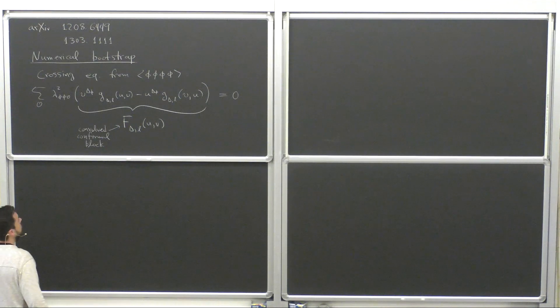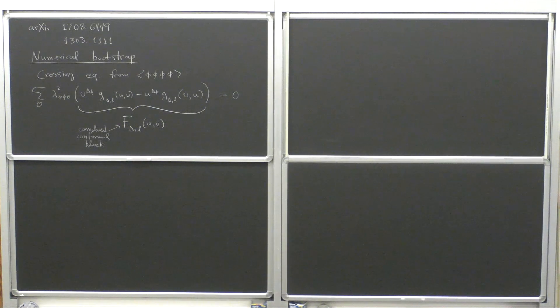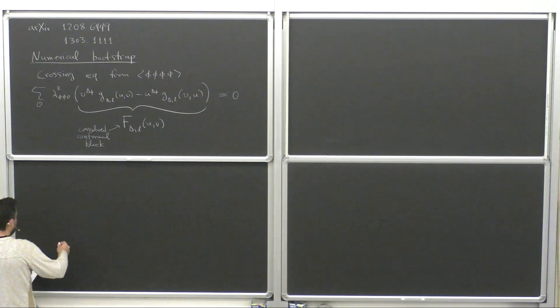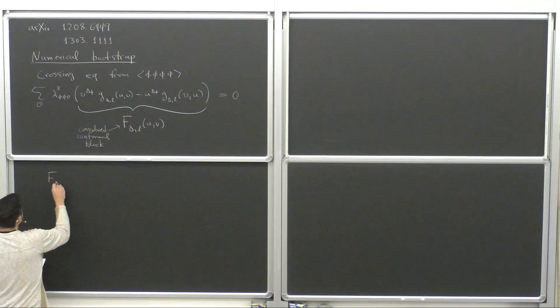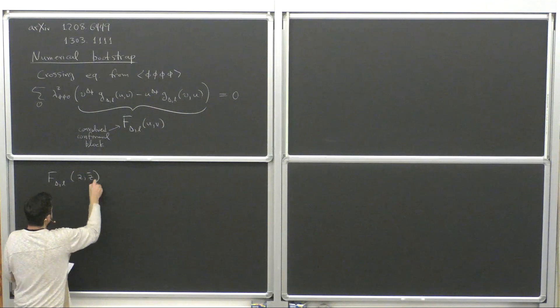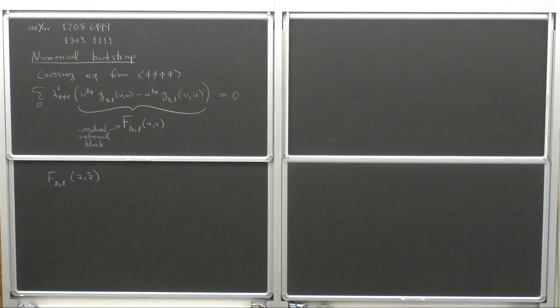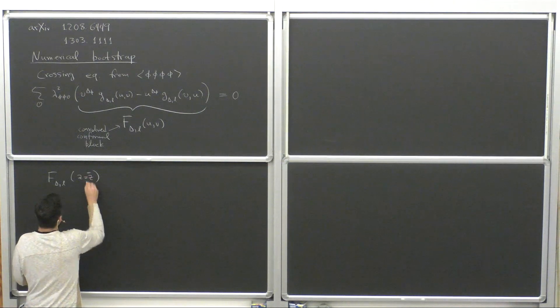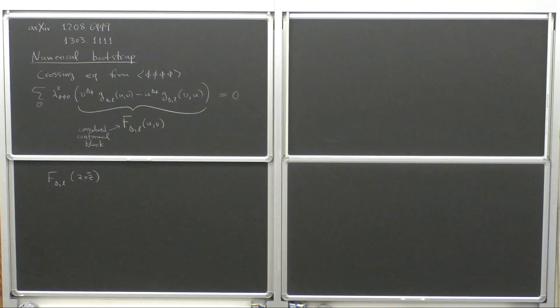From the form of this equation, it does not seem at all obvious that you will get upper bounds on operator dimensions. So let's try to see how you might convince yourself that something like that will happen. The way we're going to do this is to consider these functions in Z Z-bar coordinates instead of U and V — it's just a change of variables — and moreover, we will take Z equal to Z-bar.